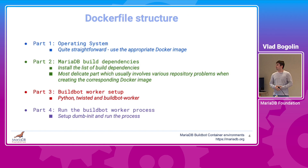Now let's talk about the Dockerfiles. Each Dockerfile can be split into four parts. First, we select the operating system — this simply involves pulling the correct Docker image from Docker Hub. Next, we install the MariaDB server build dependencies. This is usually the most time-consuming part since there can be various repository problems or missing packages which may require a bit of web searching to solve.